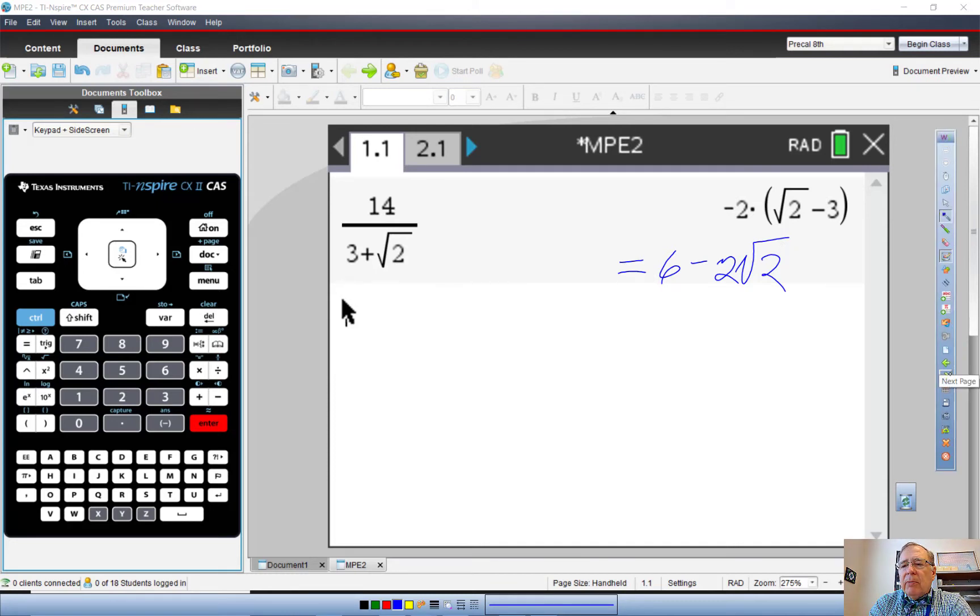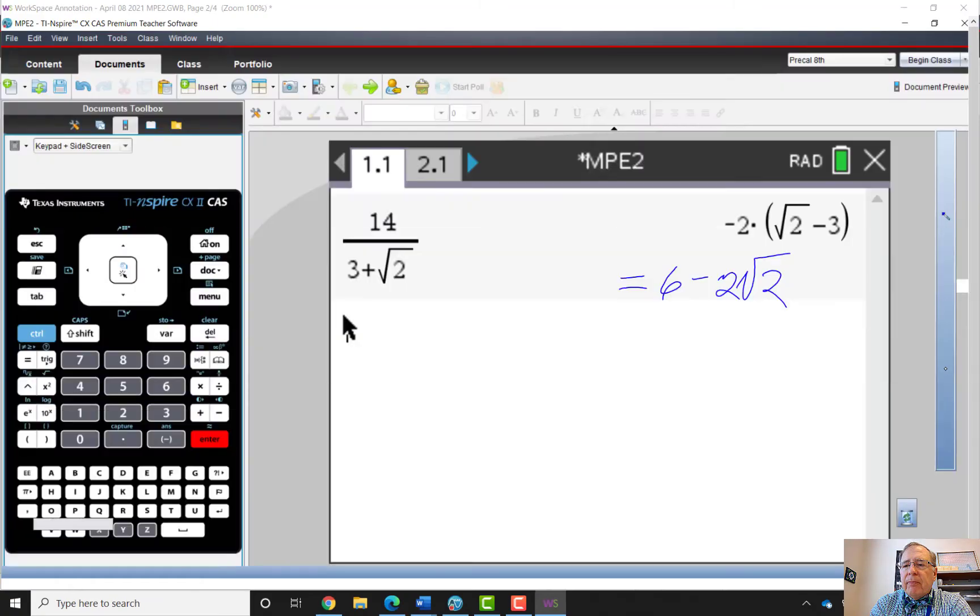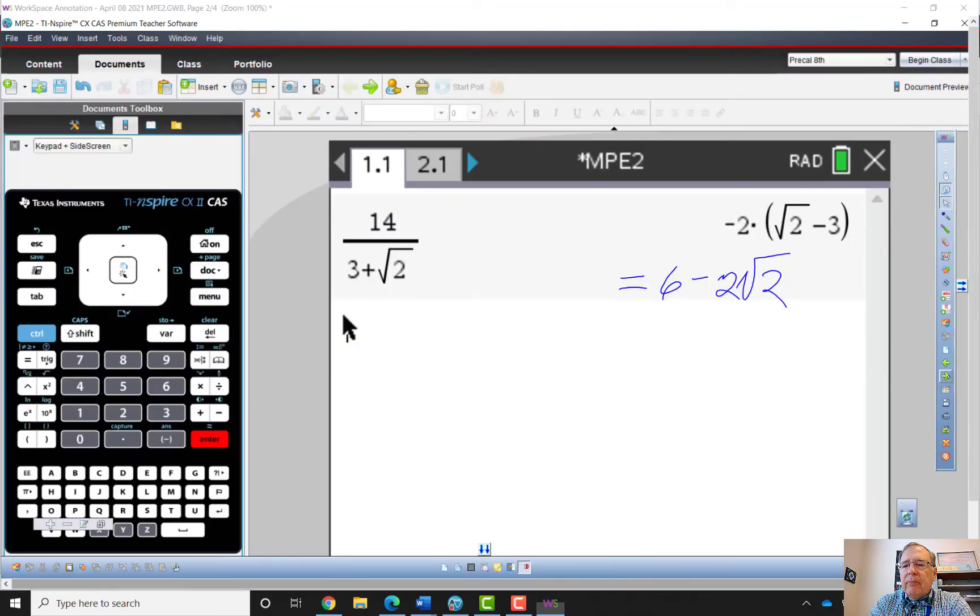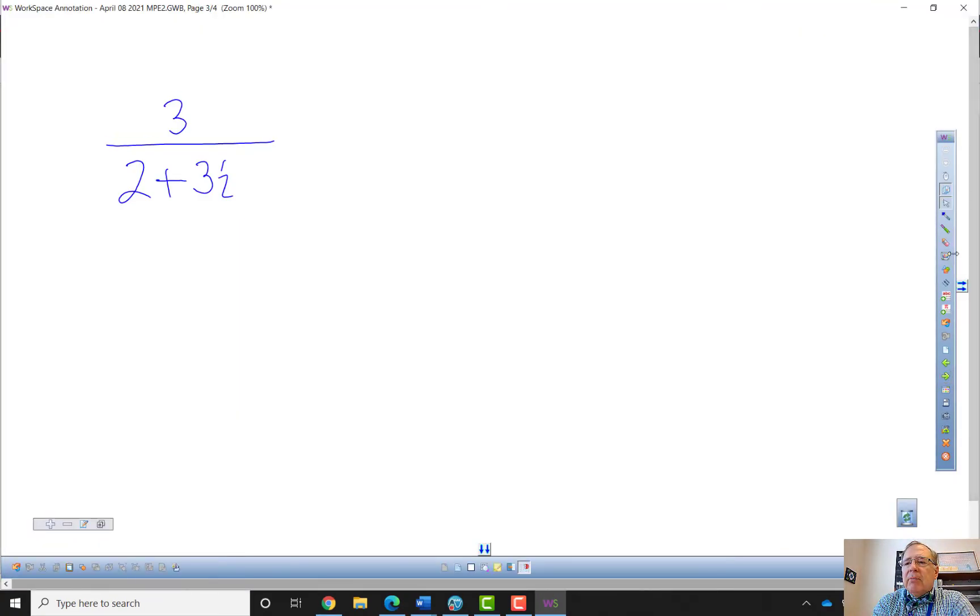And then going a little bit deeper. This may or may not show up on your placement test. But instead of a radical in the denominator, I've got a complex number in the denominator. So my strategy is going to be to multiply by one again to get rid of that complex number. I'm going to multiply by the complex conjugate divided by itself.